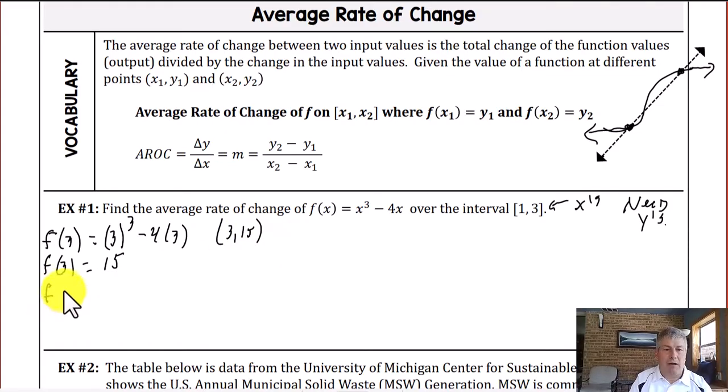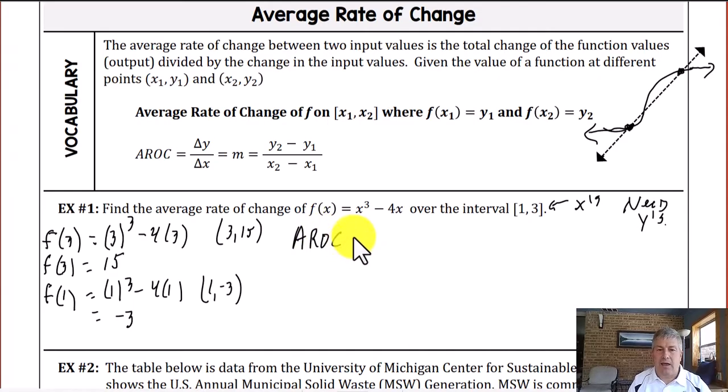And then we're going to find f of 1 which is just 1 cubed minus 4 times 1 which is negative 3. So that's the ordered pair 1 negative 3. And now we can figure out the slope or the average rate of change. We'll abbreviate that AROC.